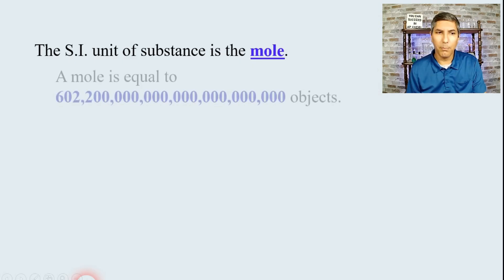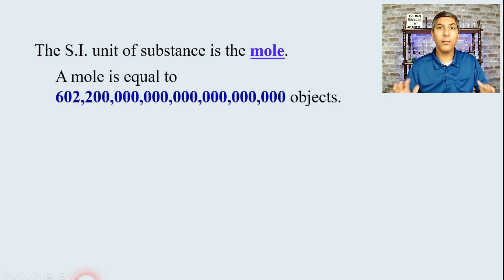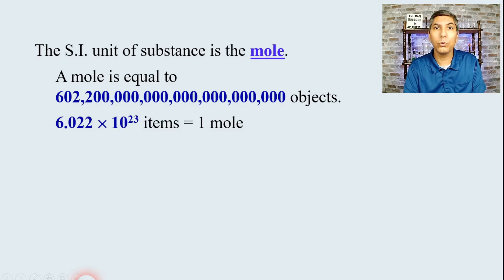This is the fundamental unit of substance that we use in all of chemistry, the mole. And basically, a mole is defined as a very, very large number of objects. In fact, it's a little bit over 600 to 6 trillion objects. That is an unimaginably large number. Now, it's so large, we normally write that in scientific notation. We write it as 6.022 times 10 to the 23rd items. That's how many objects or things there are in one mole.